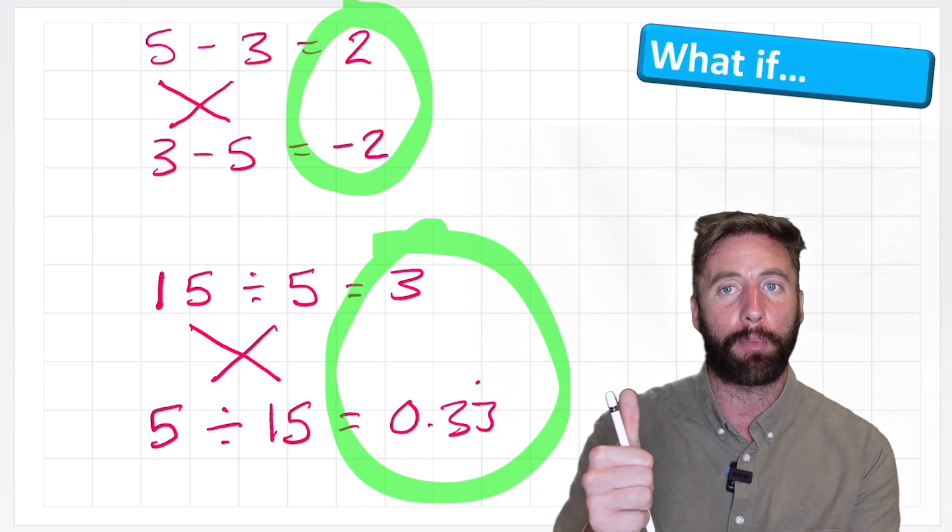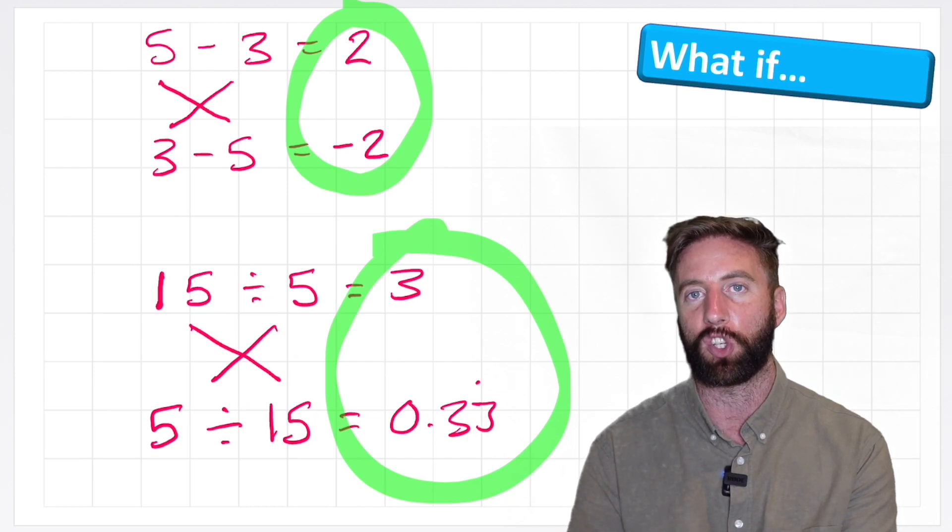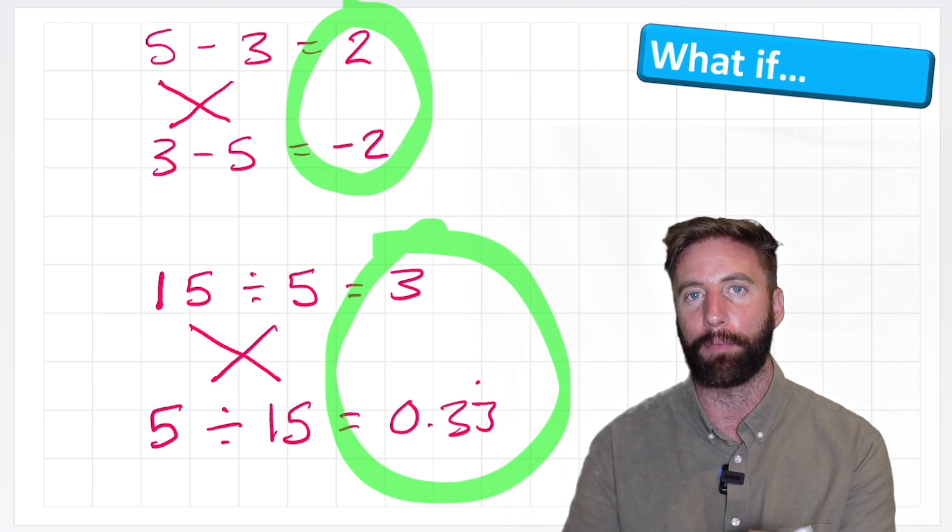So addition and multiplication are commutative. Doesn't matter which way around we put our numbers in the question, but subtraction and division are not. Very important to remember.